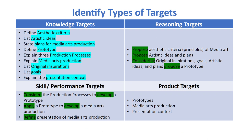For reasoning targets: propose aesthetic criteria for media arts, propose artistic ideas and plans considering original inspirations and goals, and propose a prototype. For skills and performing targets: consider the production processes to develop a prototype, apply a prototype to develop a media arts production, and refine the presentation of media arts production. The product targets are prototypes, media arts production, and presentation context.